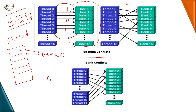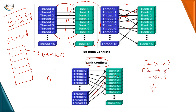In random access, even if thread 0 accesses bank 1 and thread 3 accesses bank 0, as long as each thread accesses only one bank at a time there are no bank conflicts. However, a bank conflict occurs when two or more threads try to access the same bank simultaneously — for example, thread 1 and thread 10 both accessing bank 2. If one thread is writing while another is reading the same bank at the same time, you get a conflict. Shared memory management must handle bank conflicts carefully.